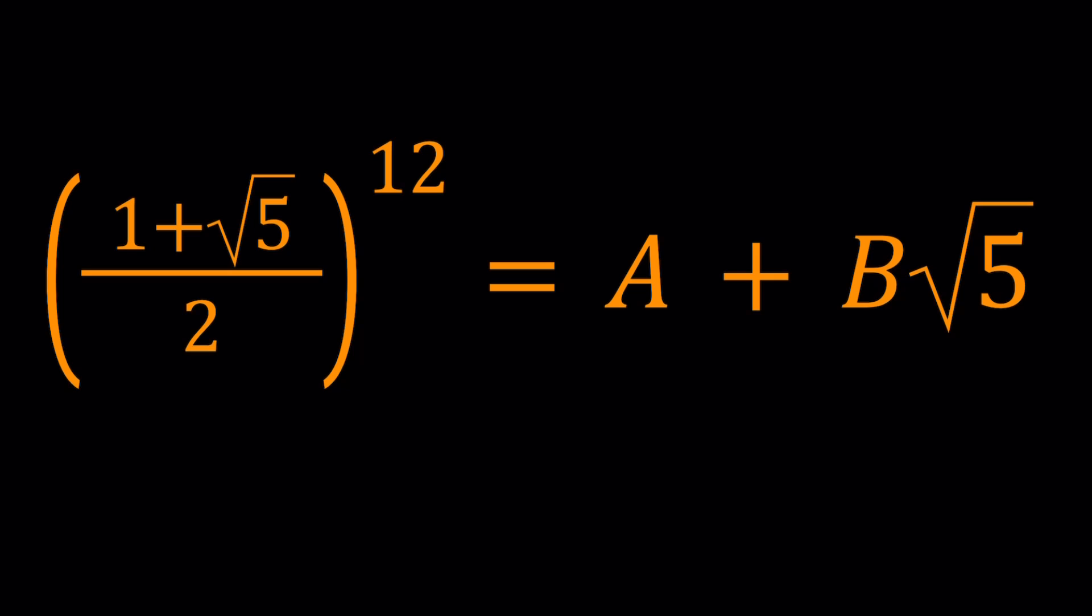So what is golden ratio to the 12th power? Of course we have these constants here, a and b. So we're going to write our answer in this form, a plus b root 5. So we're going to basically find the a and b values. And at the end, I'm going to show you a couple different results.